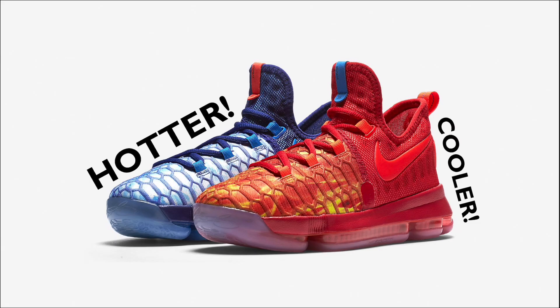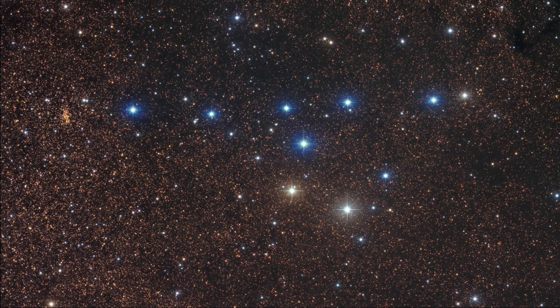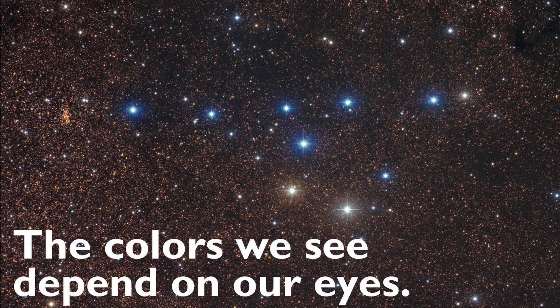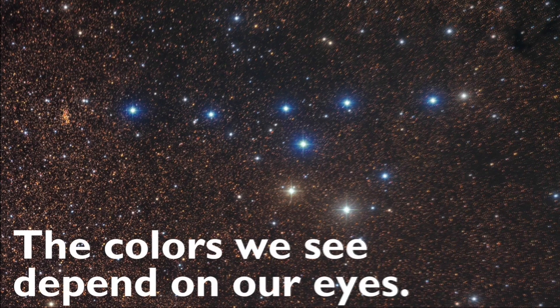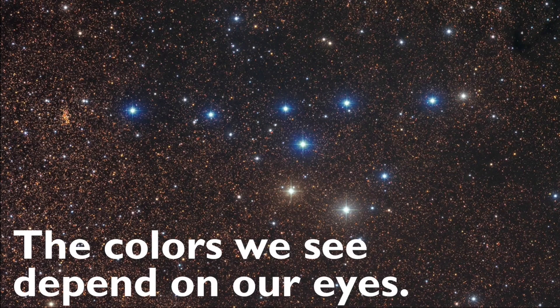In order to understand why we see stars in the colors we do, we need to realize that those colors are dependent on how our eyes perceive color. Perception of color is unique to each individual. No two people will perceive colors in the same exact way, since each person's eyes are unique to them. It all depends on the structure of our eyes and how our eyes communicate information about our surroundings to our brains.